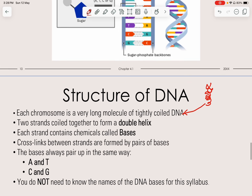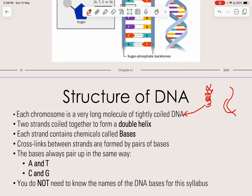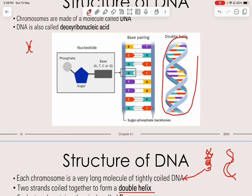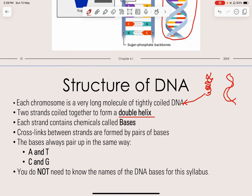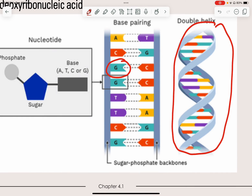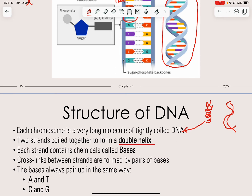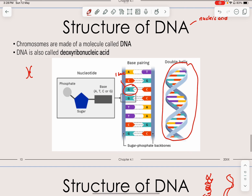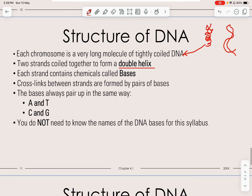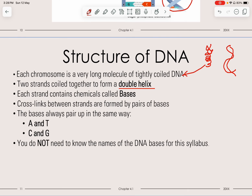Each strand contains chemicals called bases. Each position has one base, and cross-links between strands are formed by pairs of bases — two bases that bind complementarily, similar to how enzymes work. The bases always pair up in the same way: A with T, and C with G. A memory tip to remember this: T, A, C, G — think of it as a 'tactical gun' if you play games. So A pairs with T, and C pairs with G.